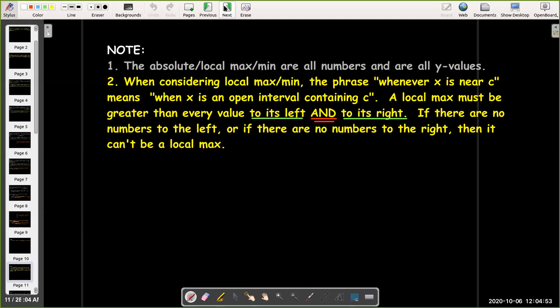And when we're considering a local max or a local min, we have that phrase whenever x is near c. So that really means when x is an open interval containing c. So that tells us that c has to be in the interior of the domain of f. There must be points to the left of c and to the right of c. Otherwise, it's not in the interior. You can't put an open interval around it. And so if you don't have numbers to the left of c, or if you don't have numbers to the right of c, then you cannot have a local max or a local min at x equals c.